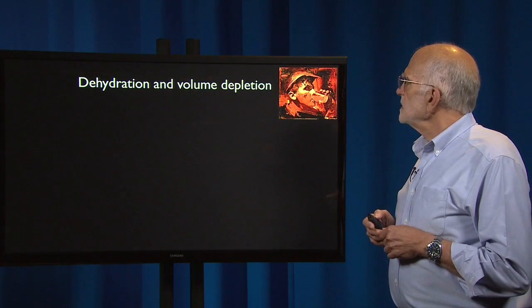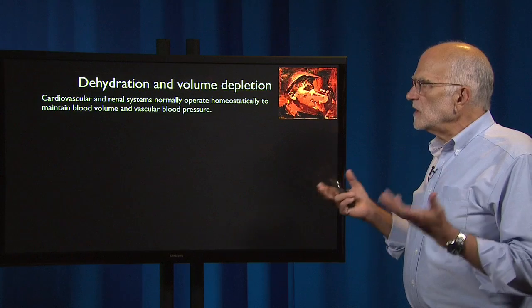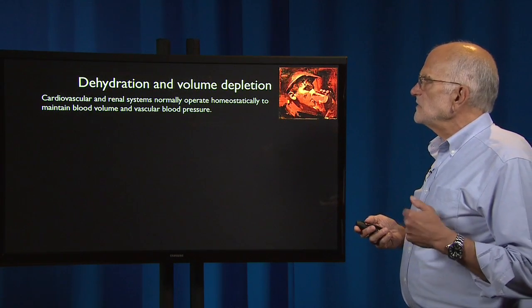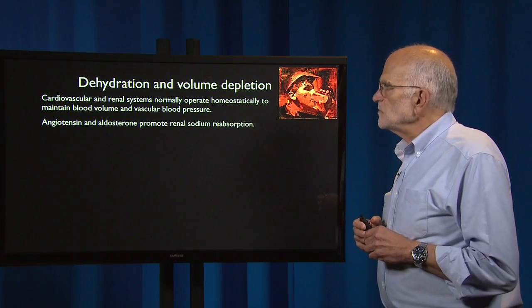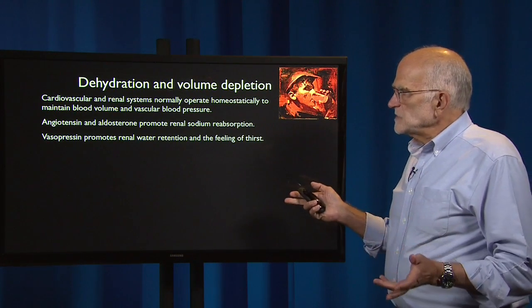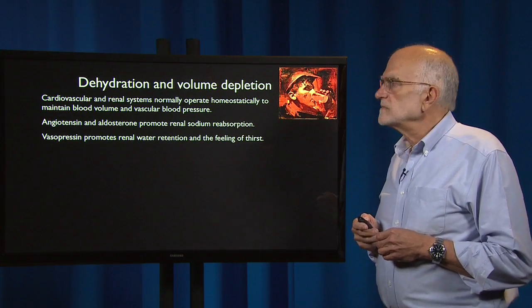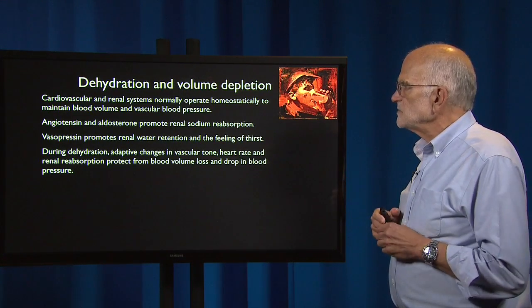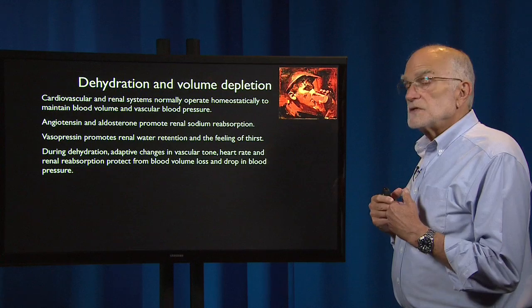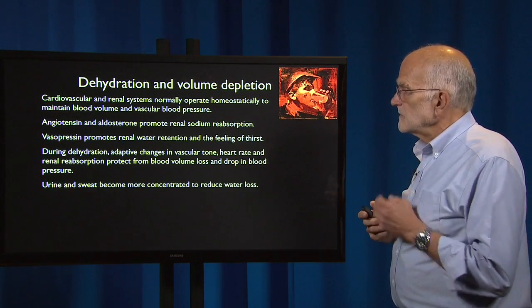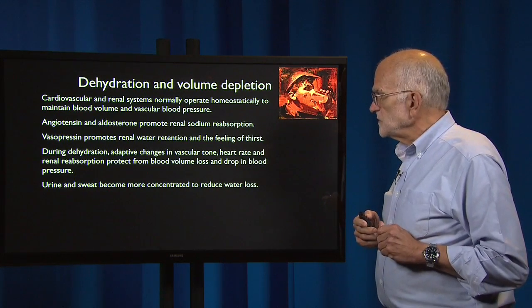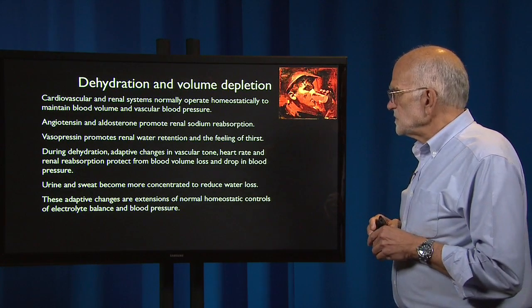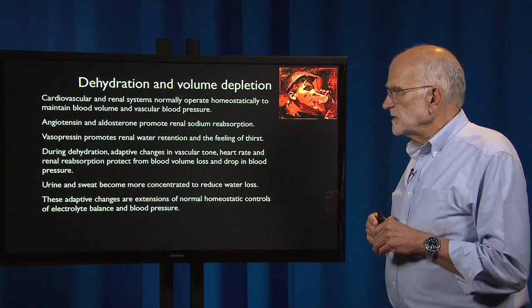What about dehydration and volume depletion? Our cardiovascular and renal systems are normally operating homeostatically to maintain blood volume and vascular blood pressure. Angiotensin and aldosterone promote renal sodium reabsorption. Vasopressin promotes renal water retention and the feeling of thirst. During dehydration, adaptive changes in vascular tone, heart rate, and renal reabsorption protect us from blood volume loss and a drop in blood pressure. Urine and sweat become more concentrated to reduce water loss. These adaptive changes are extensions of normal homeostatic controls of electrolyte balance and blood pressure.